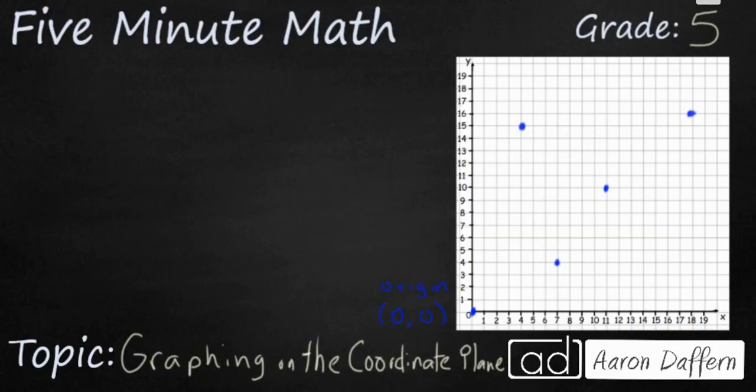This dot right here, you see it's on the same line as the 7 on our X axis. So it's going to be 7, and it's up 1, 2, 3, 4. So that's 7 comma 4.